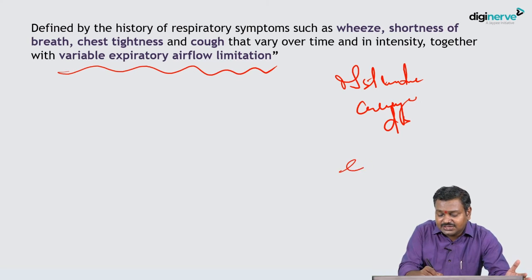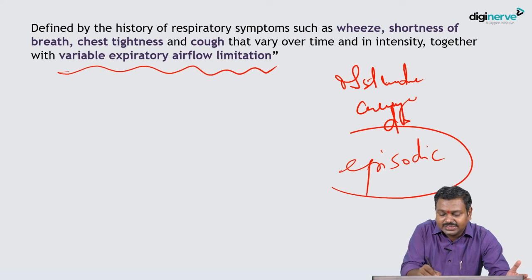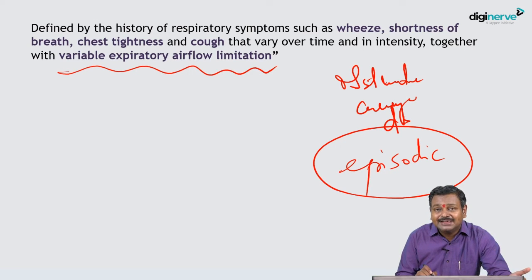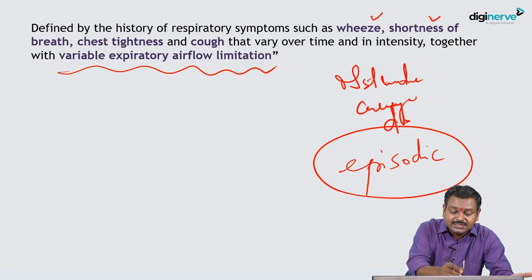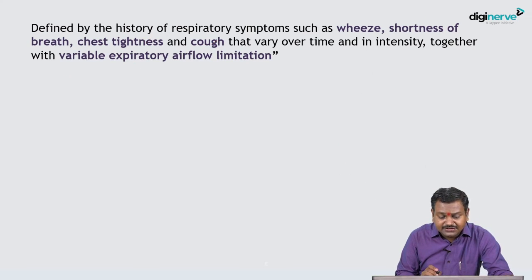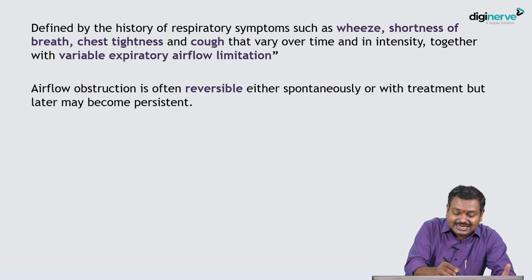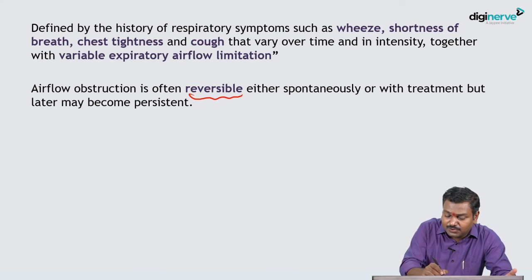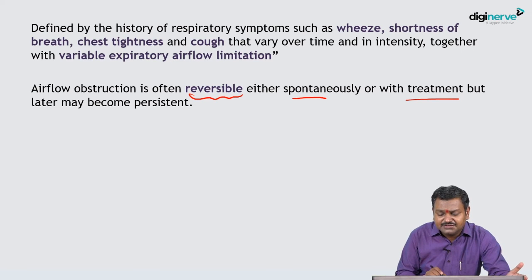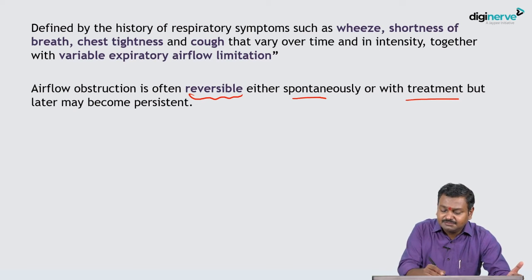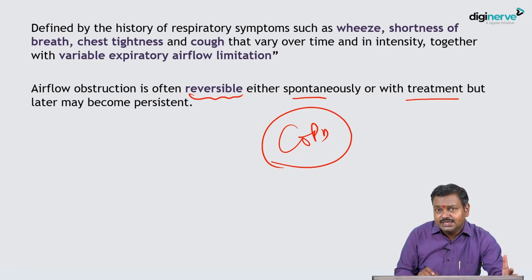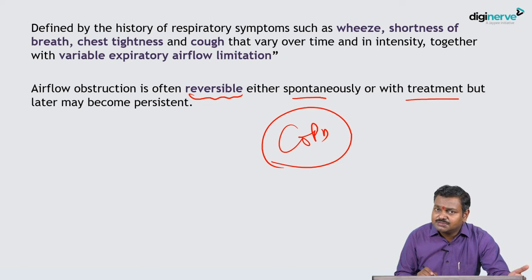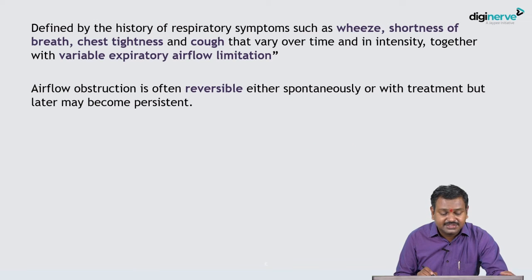A very important feature to remember: asthma is episodic, with symptoms varying over time and intensity — wheeze, shortness of breath, chest tightness, and cough. The most important feature is that the variable expiratory airflow limitation is reversible, either spontaneously or with treatment. This contrasts with COPD — chronic bronchitis and emphysema — where the obstructive element is associated with destruction and is not reversible. In asthma, with medication or sometimes spontaneously, the limitation reverses.